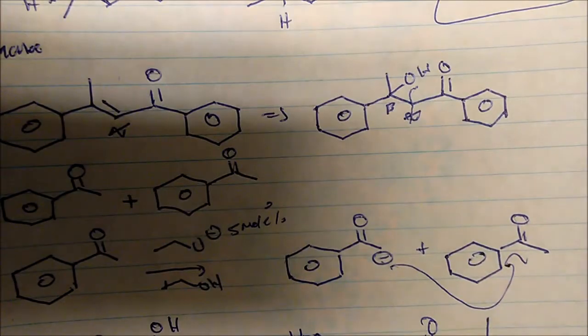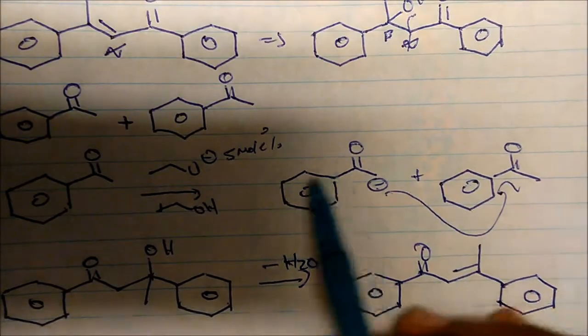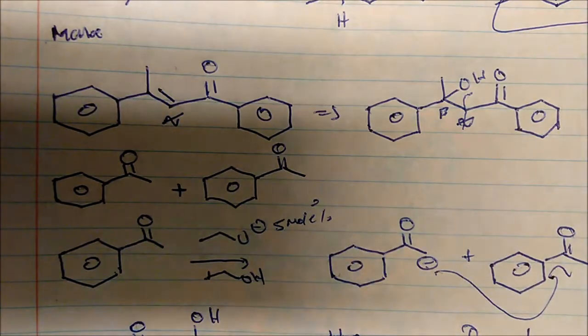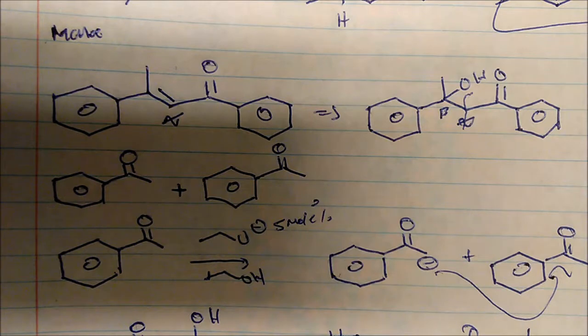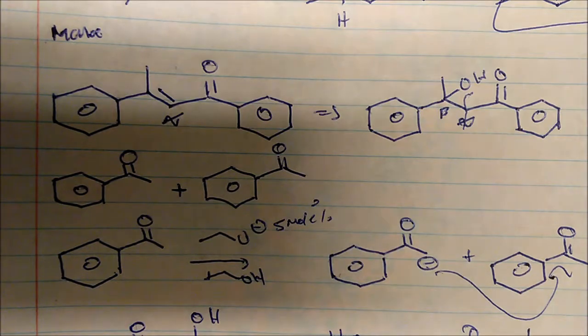That's how we synthesize that product — these two drawn structures are the same molecule just drawn differently. It's very important to remember: from secondary alcohols we get aldehydes, from tertiary alcohols we get ketones. Once you have that, these retrosyntheses become super easy.